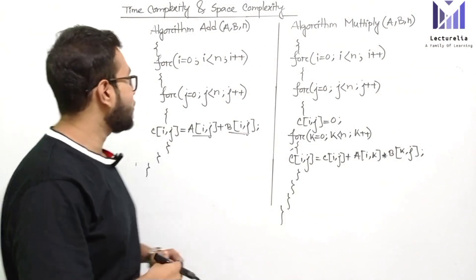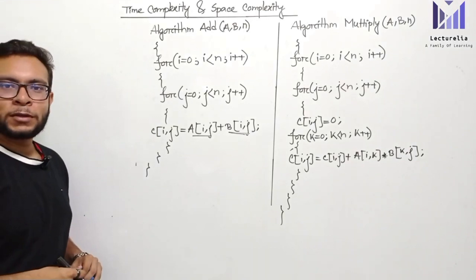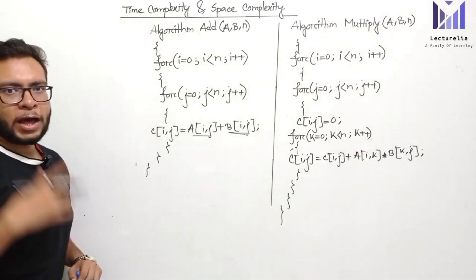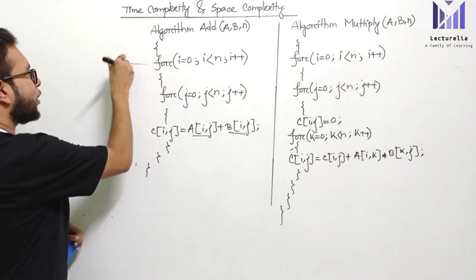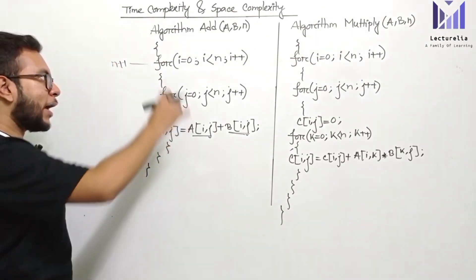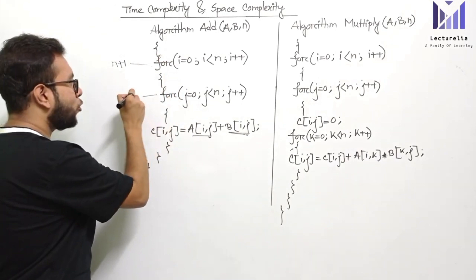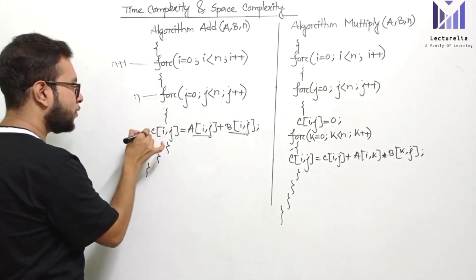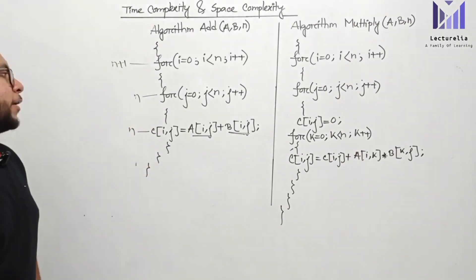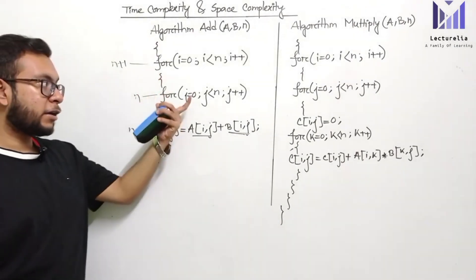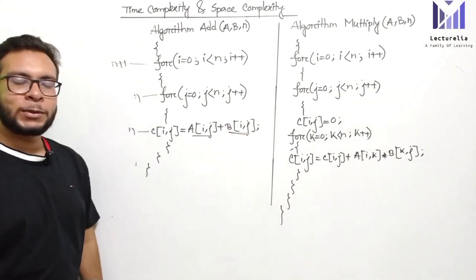Again, i is equal to 0, i is less than n, i plus plus — look at the control flow. The for loop executes n plus one times. Children watch: a for loop executes n plus one times, and the statement inside executes n times. Now again, there is a for loop within a for loop. Let's talk about the control flow of this inner for loop.